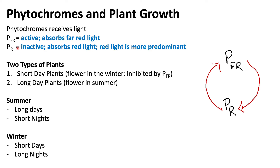Far red is the active state, whereas red is the inactive state. As their names suggest, phytochrome red will absorb red light, whereas phytochrome far red will absorb far red light.